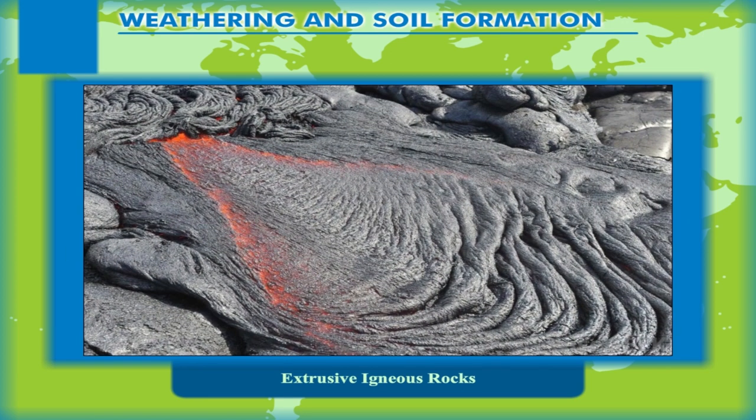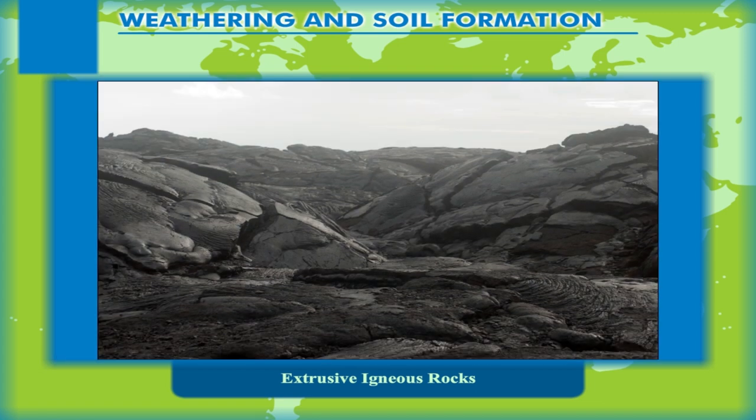Extrusive Igneous Rocks. During volcanic eruptions, when magma erupts and reaches the earth's surface, it cools and solidifies. As a result, rocks are formed on the surface, known as volcanic rocks.